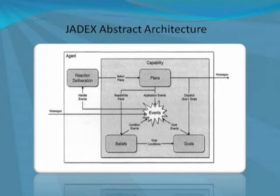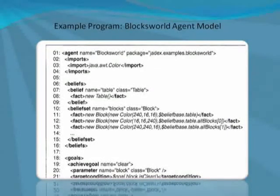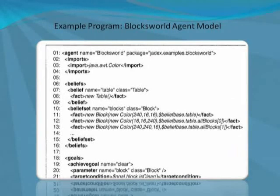The ADF of an agent is shown in the figure where tags and elements of the JDEX meta model are in boldface and embedded expressions are in italics. The model starts with the declaration of the agent tags specifying the name and package of the agent. The package is used to resolve references to other files.